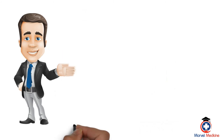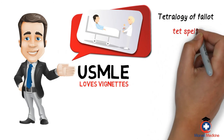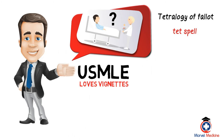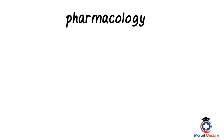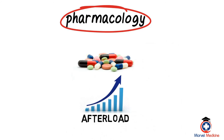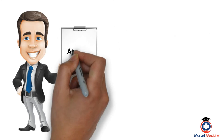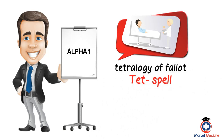The USMLE loves vignettes where a patient has Tetralogy of Fallot and they describe a tet spell — they won't just say the patient's having a tet spell. They'll show you a picture of a blue child or describe a cyanotic patient, then ask what maneuver will help. According to what we just learned, increasing the aorta's afterload helps. What does that? Squatting. Incorporating pharmacology: what drug could we give to increase the aorta's afterload? An alpha-1 vasoconstrictor, such as phenylephrine. If given a typical tet spell scenario and asked which medication helps, you would pick phenylephrine.